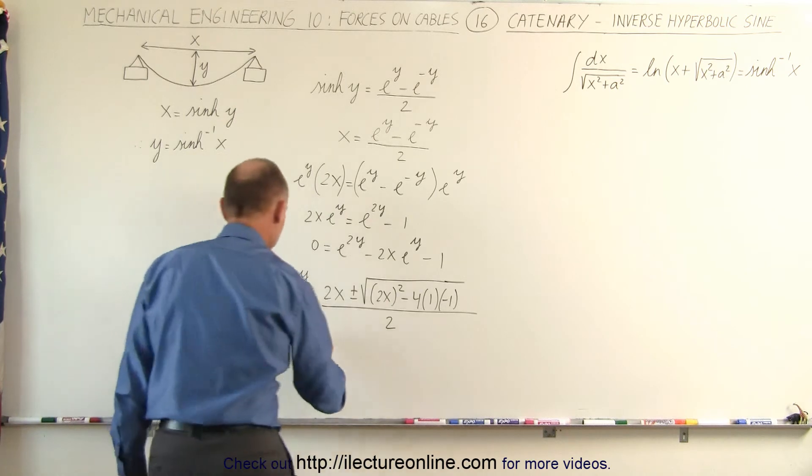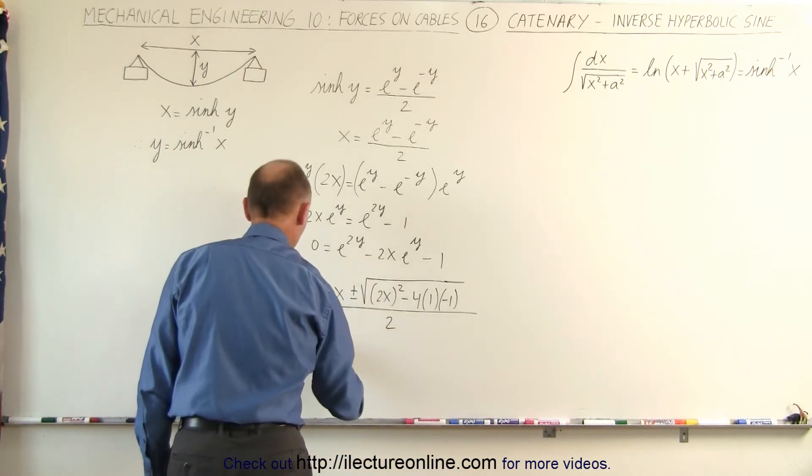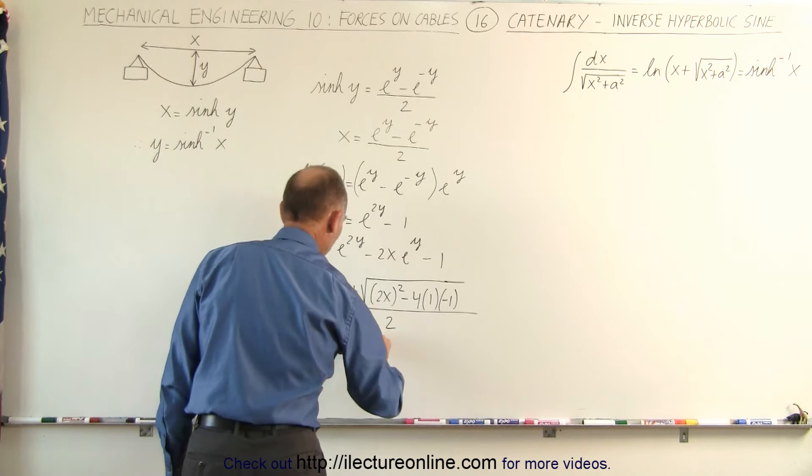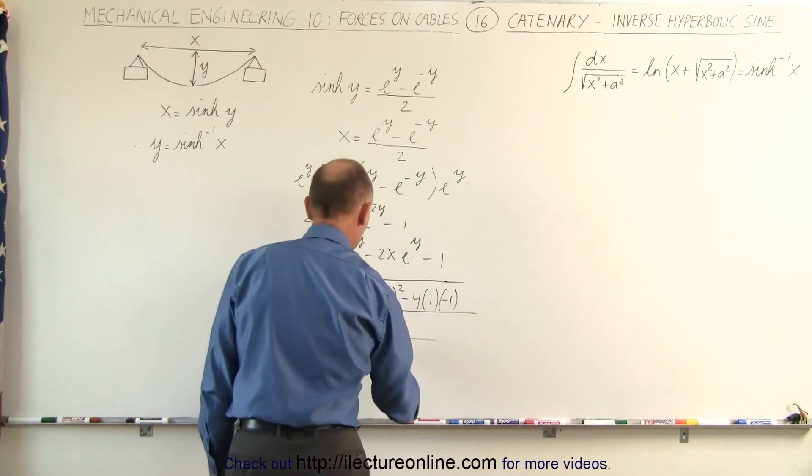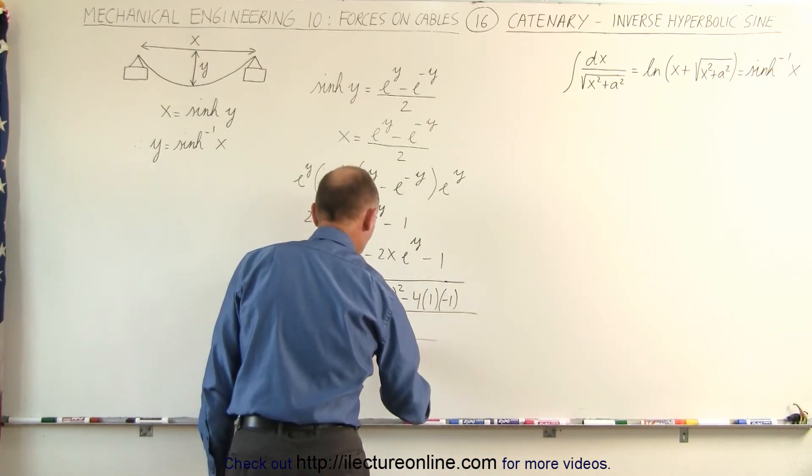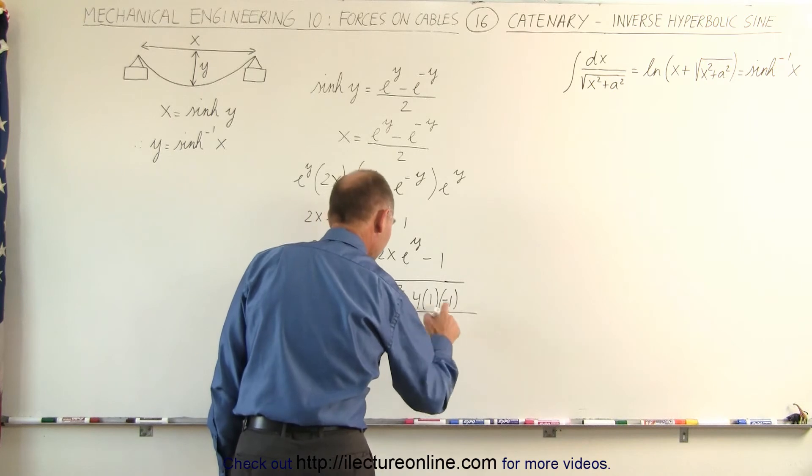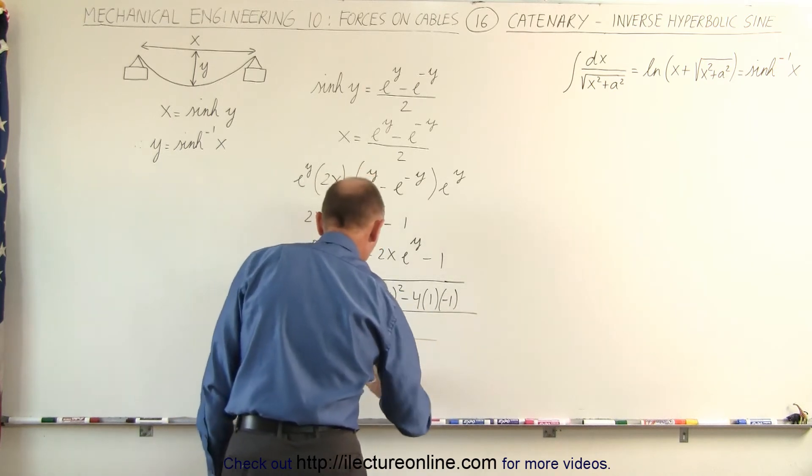Simplifying that a little bit, we get e to the y is equal to 2x plus or minus the square root of, this would be 4x squared, minus 4 times the negative 1, that would be plus 4, all divided by 2.